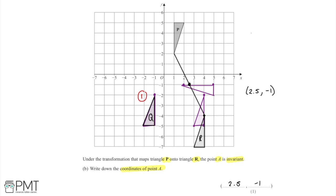So the invariant point A has coordinates (2.5, -1), and that is how we get the one mark for this final part of the question.